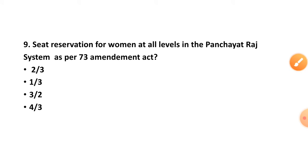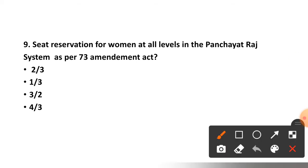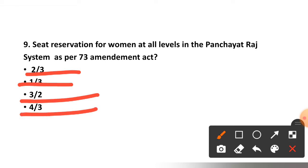Question number nine: Seat reservation for women at all levels in the Panchayat Raj system as per the 73rd Amendment Act is — 2/3, 1/3, 3/2, or 4/3? The correct option is 1/3, option number two.